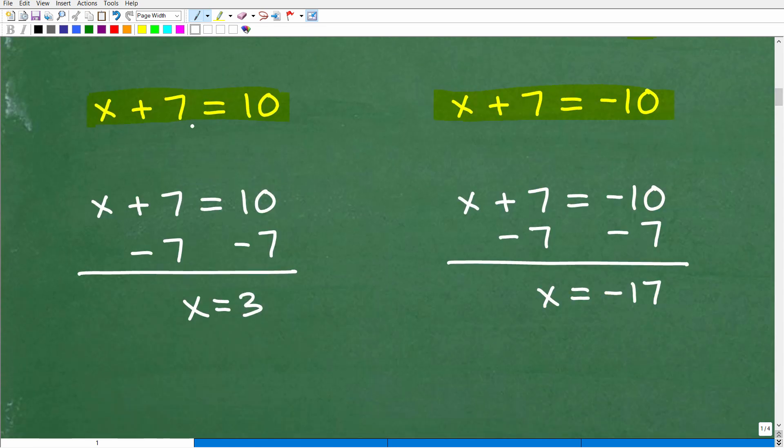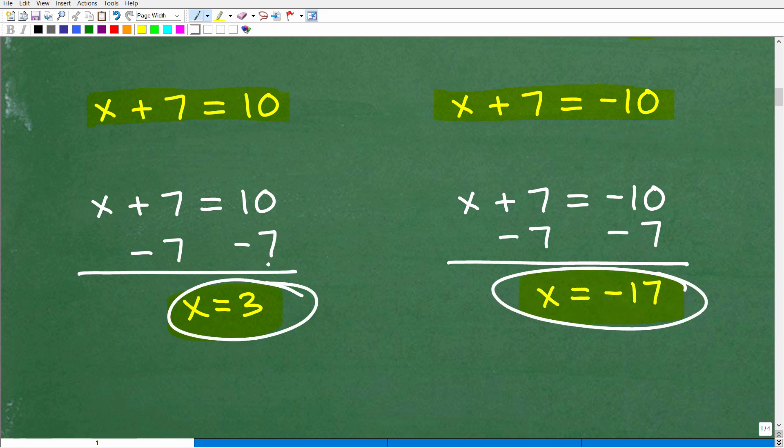So here we have x plus 7 is equal to 10 and x plus 7 is equal to negative 10. Now we just simply solve for x. Super easy. You can see the work here. So I get x is equal to 3 or x is equal to negative 17. Again, these are our two solutions. When you're dealing with absolute value equations, you will always have two solutions.